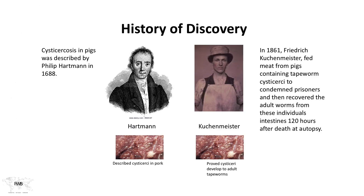The history of the discovery of this parasite is a little different than that of Taenia Saginata, and it involves two discoveries. The first, in the 1600s by Hartman, who noticed that much of the pork being consumed locally had these little white flecks in them. With a hand lens, he was actually able to see some kinds of structures inside, but had no idea what he was looking at.